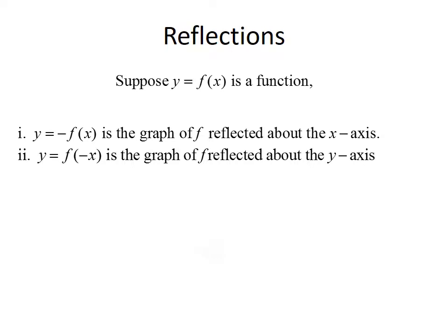The last transformation we'll talk about are reflections. Suppose y = f(x) is a function. If we consider y = -f(x), where the minus sign is outside of the function, that will be the graph of f reflected about the x-axis. And if we think about y = f(-x), where the minus sign is inside the function, that will be the graph of f reflected about the y-axis.